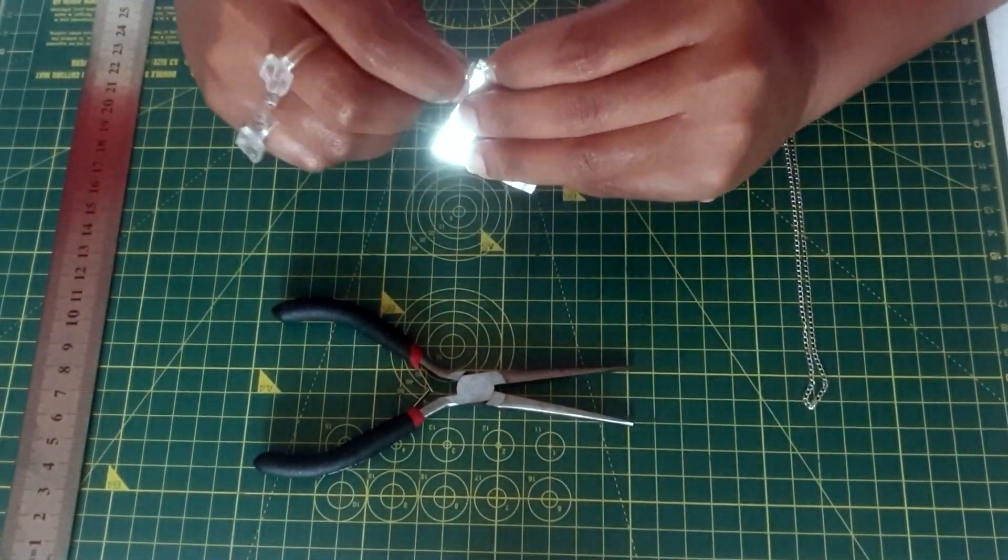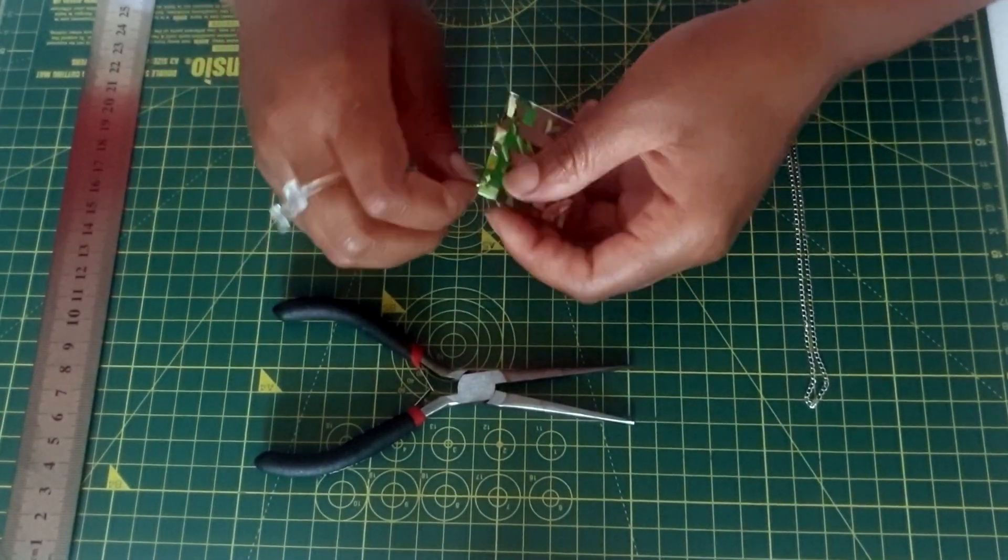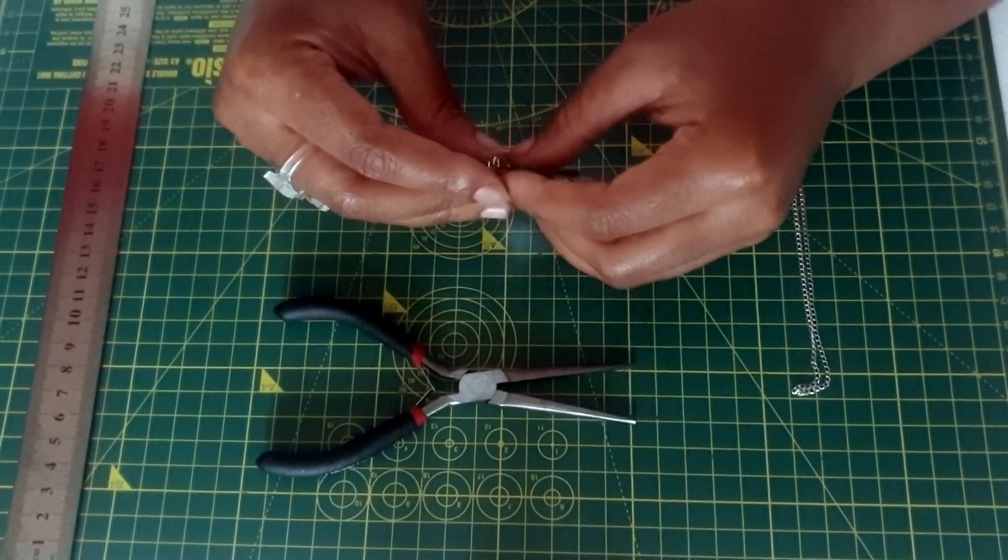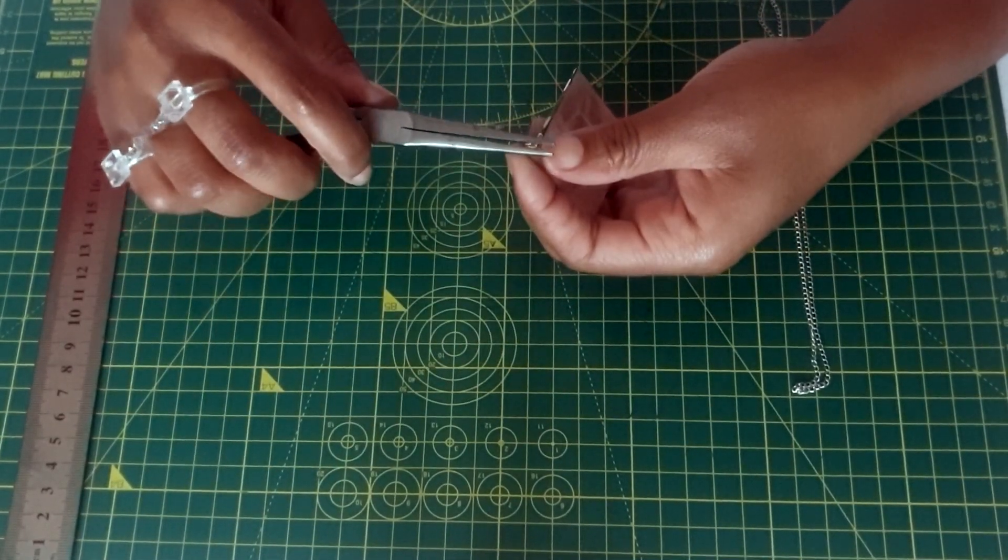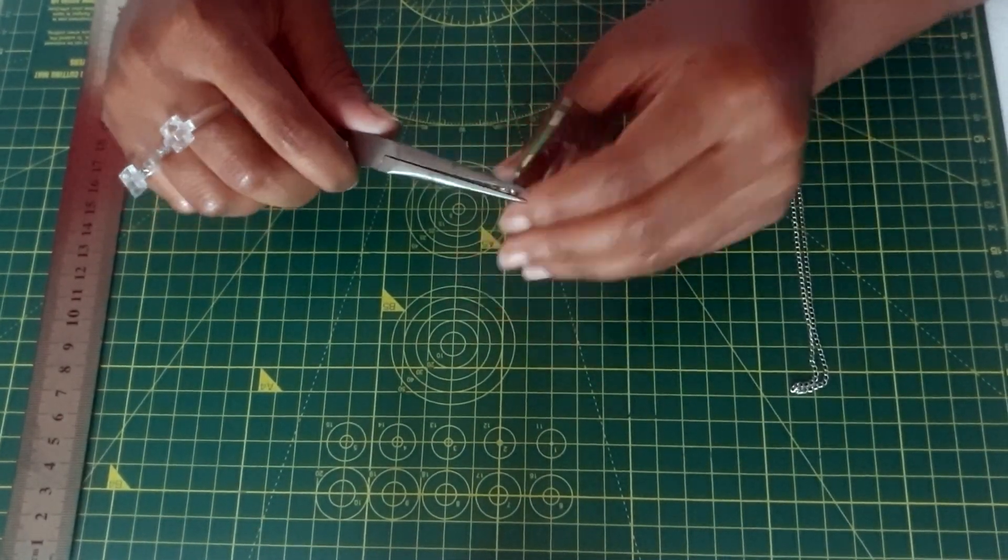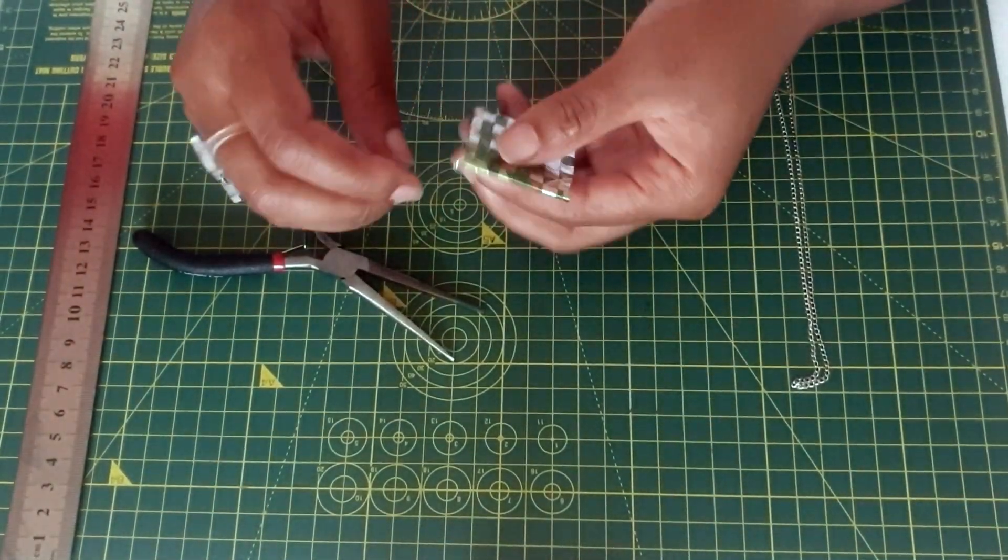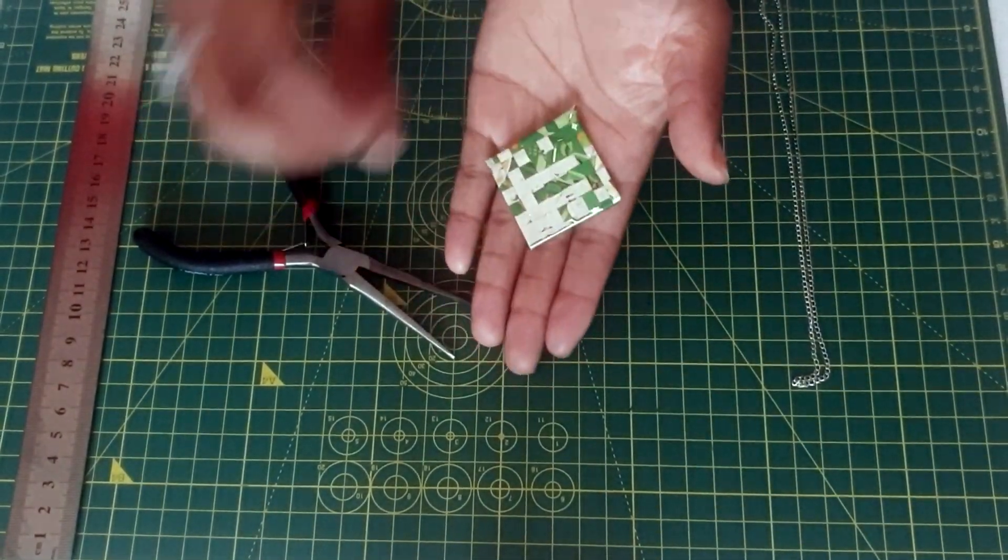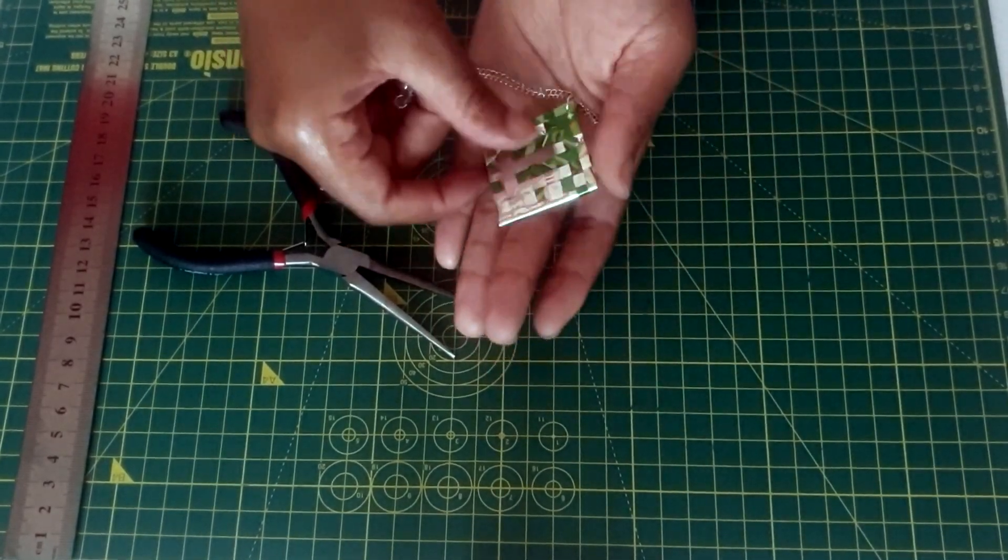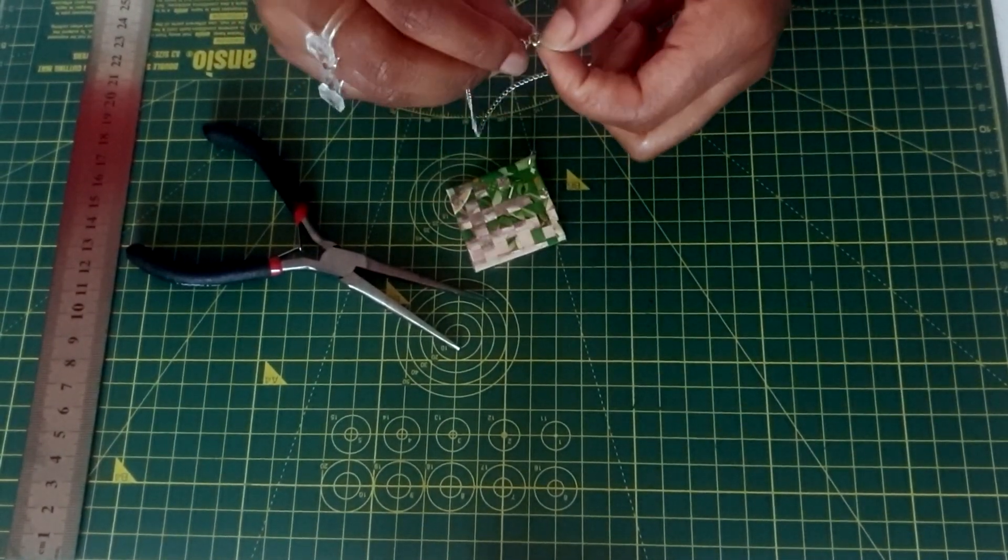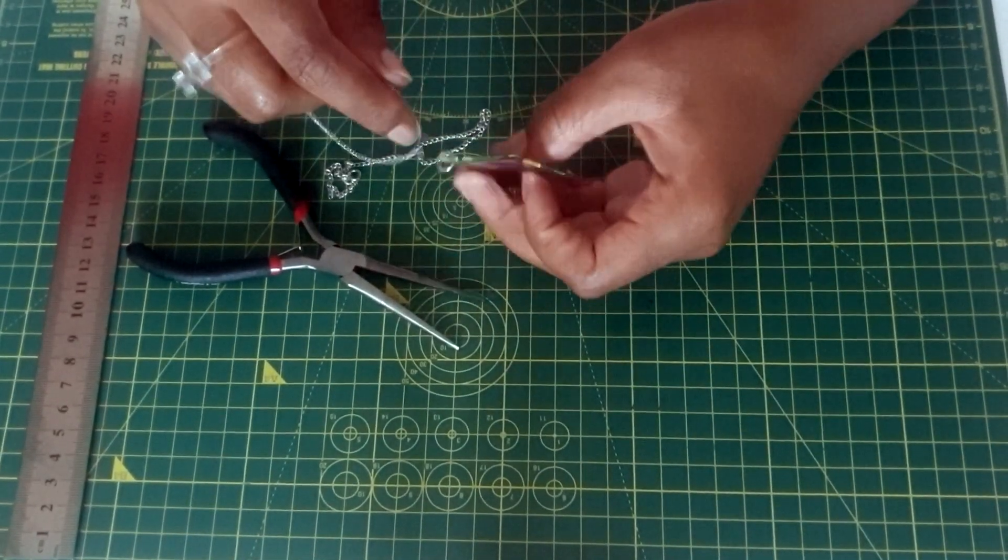Once you've made your hole you're ready to put your jump ring through so you can just open that up and put that through the hole and then you can close that up using your pliers. And then you can thread your necklace through.